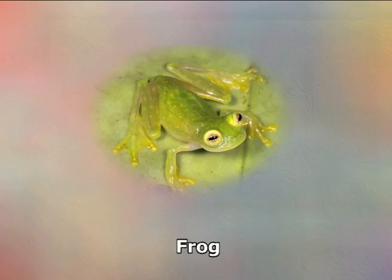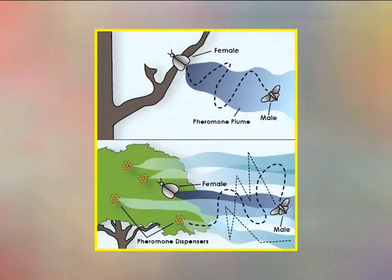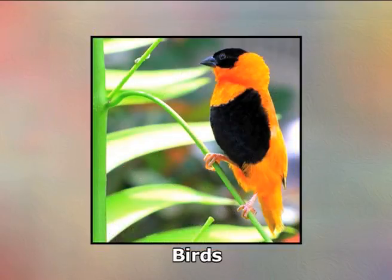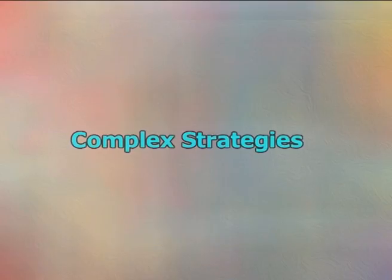Sound is little used in aquatic species but well developed in frogs and birds. Odour is particularly used in mobile terrestrial vertebrates. Most frogs sing, grunt or croak during the breeding season. Female moths produce pheromones to attract the male. Birds also sing as well as have brightly coloured plumage. Complex strategies involve elaborate forms of courtship that are unique to each species. Females usually favour males that are larger, have elaborate physical features and display more energy in courtship activity.